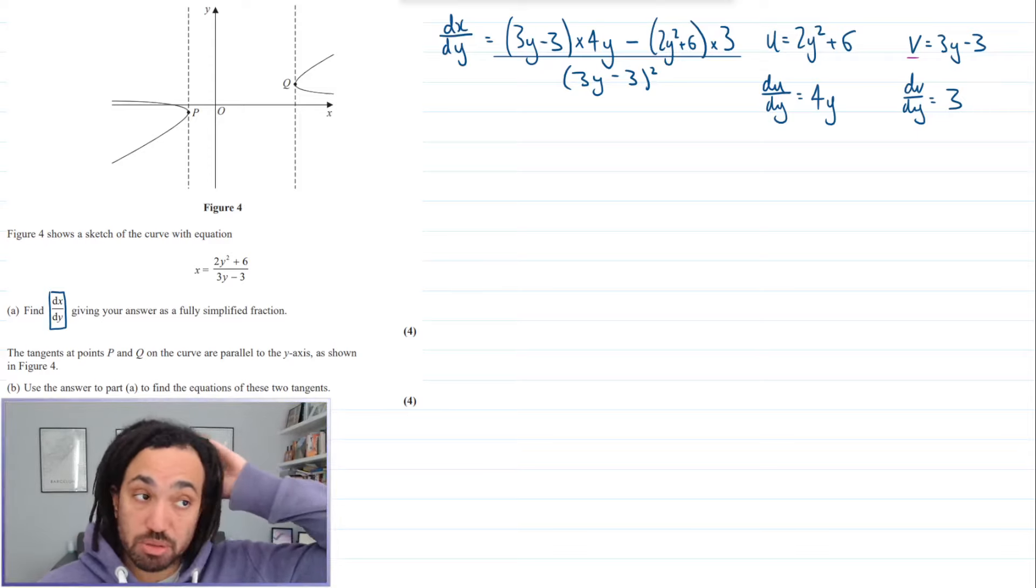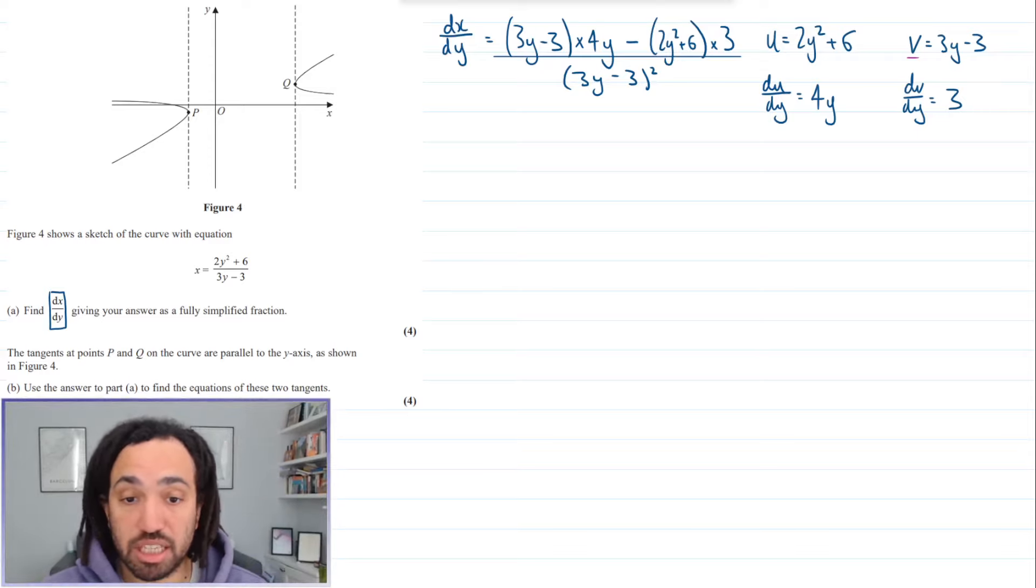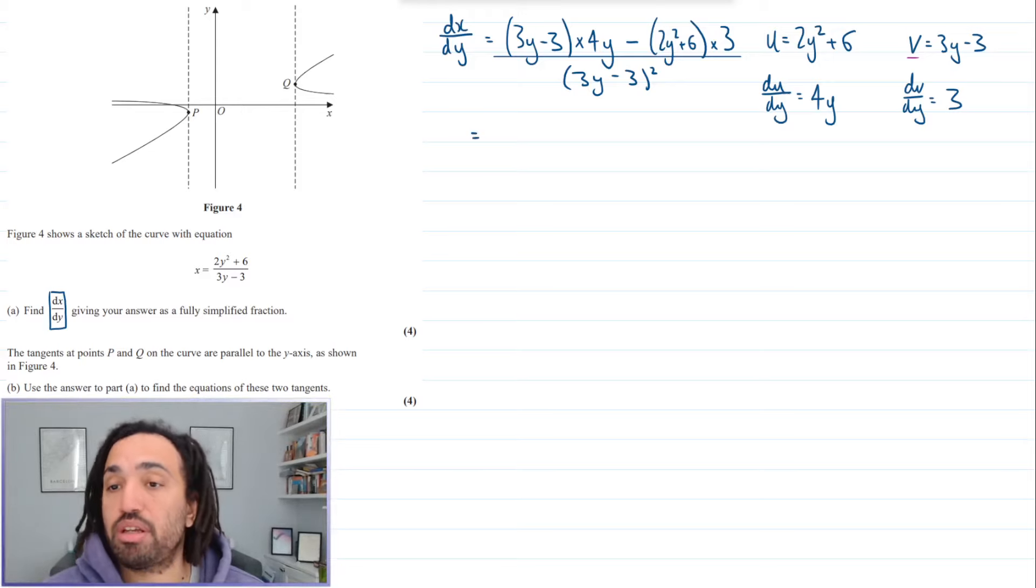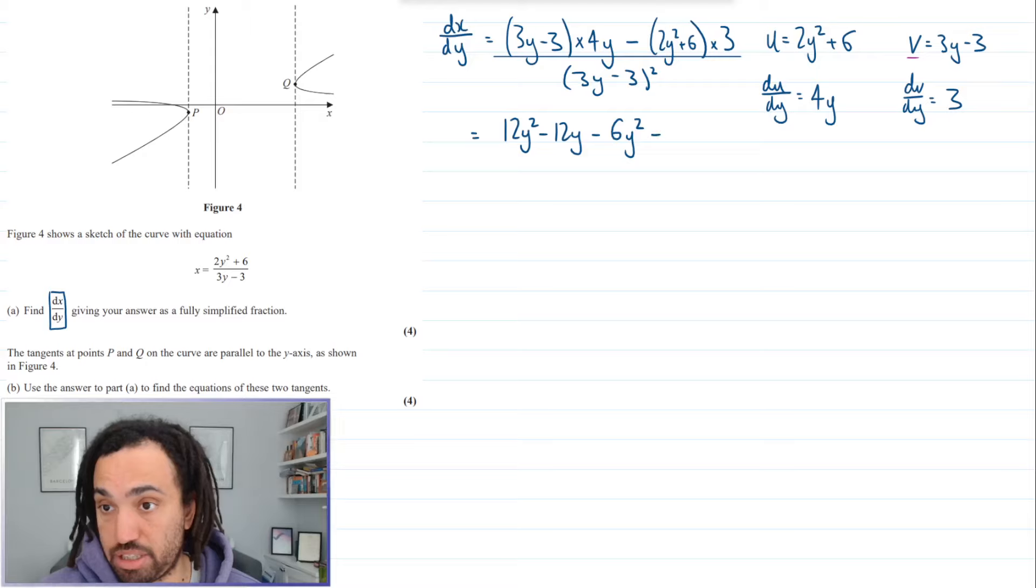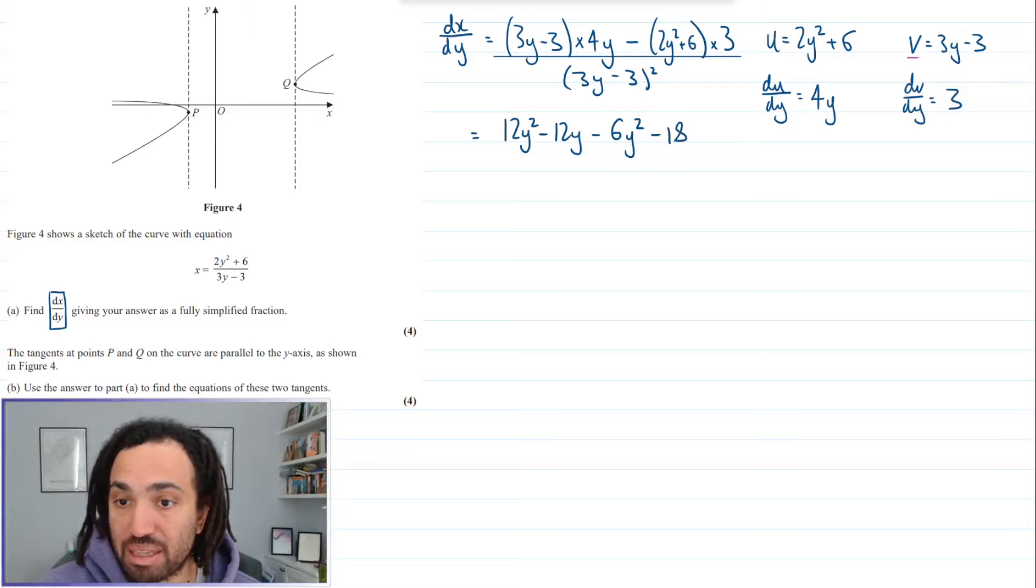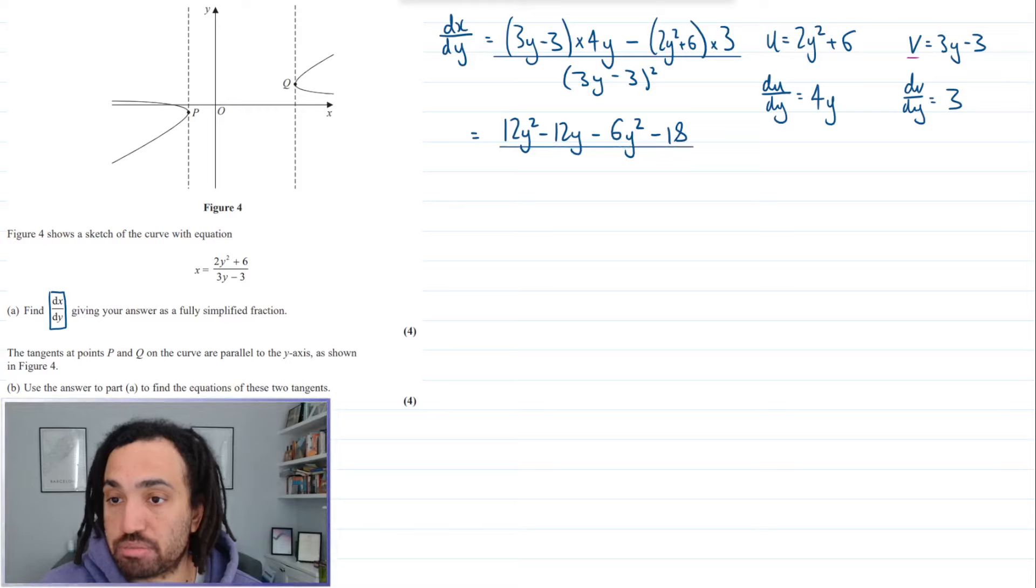Right, looks like we've got some tidying up to do. It does say it's a fully simplified fraction. So multiplying out these brackets I'm going to get 12y squared, I'm going to get minus 12y and I'm going to get minus 6y squared and minus 18. And that again is all over 3y minus 3 squared.